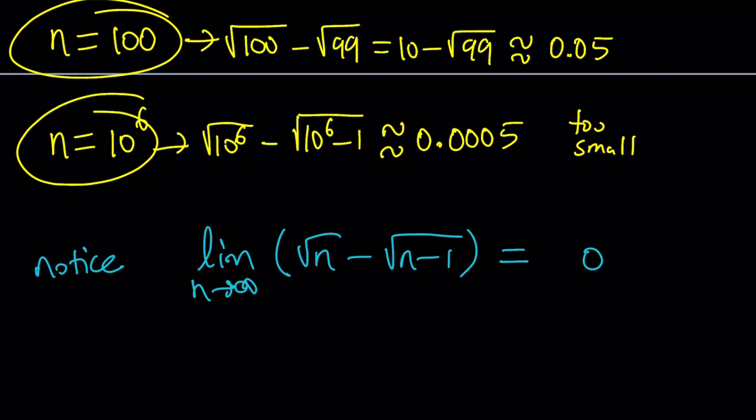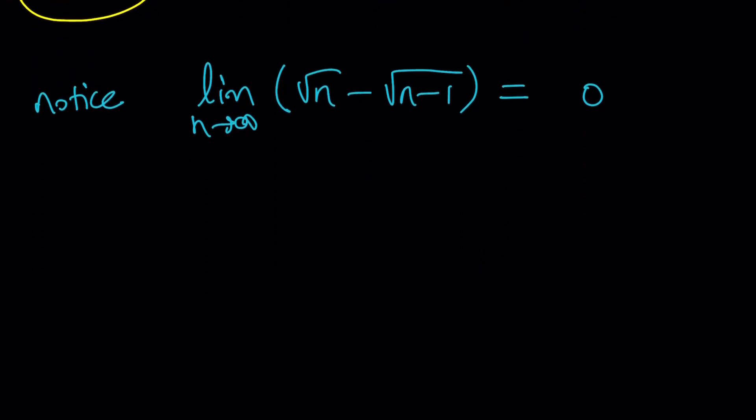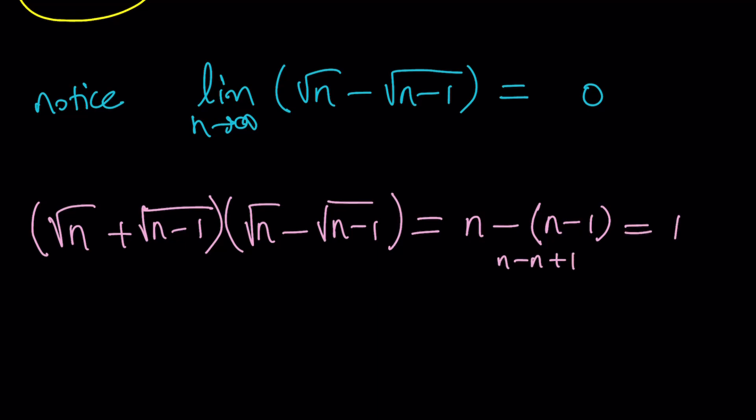So, here's the trick. We're going to go ahead and consider the conjugate of this expression. So square root of n plus the square root of n minus 1, multiplied by its conjugate is going to give us from difference of two squares, n minus the quantity n minus 1, which is n minus n plus 1, which is 1. Awesome.